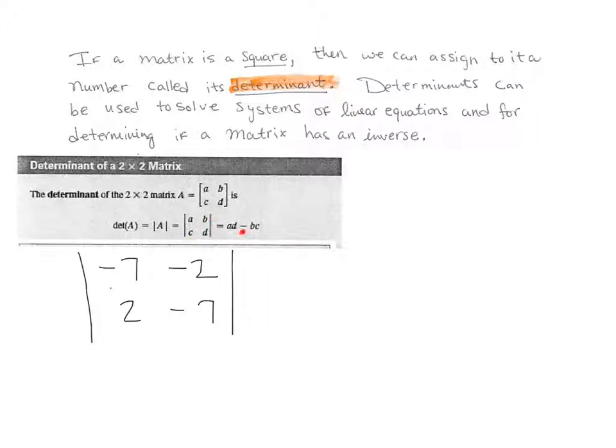In our case, we will have negative 7 times negative 7 minus negative 2 times 2. So let's go ahead and write that out: we'll have negative 7 times negative 7 minus negative 2 times 2.